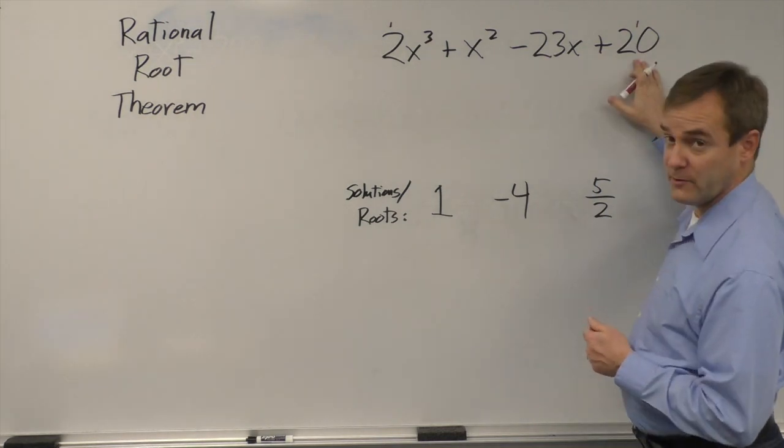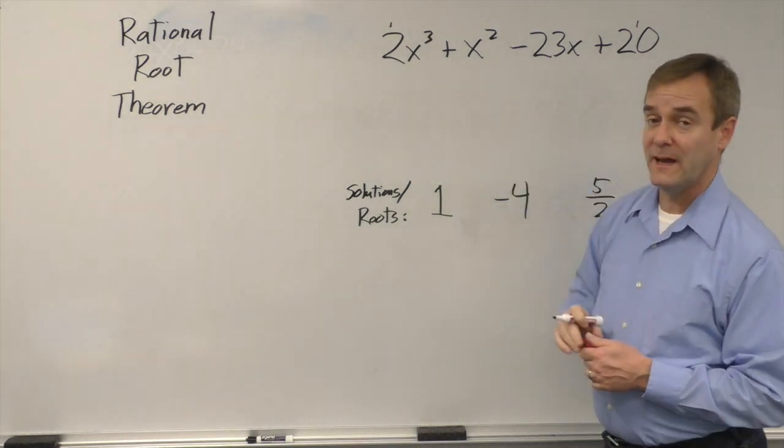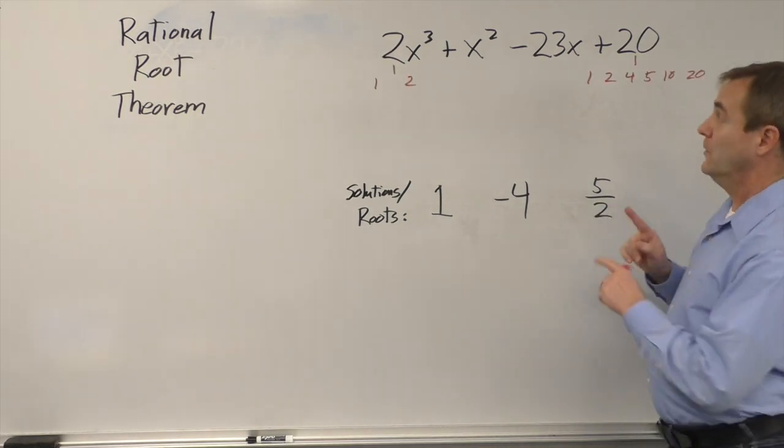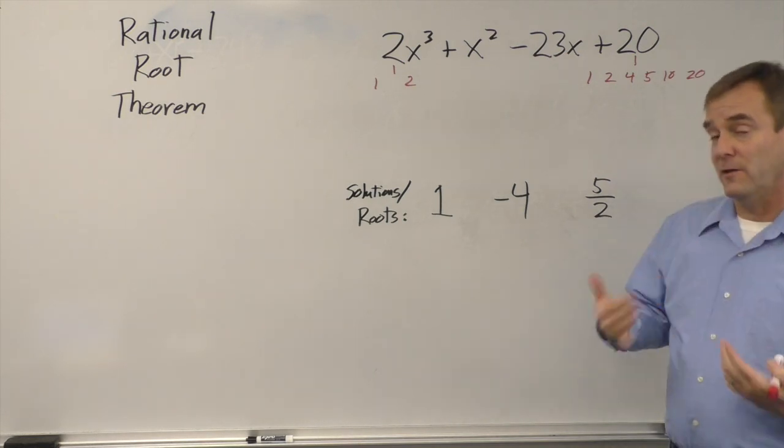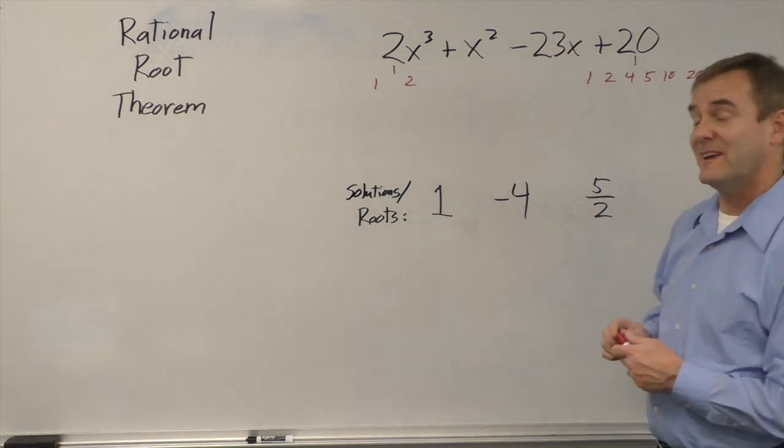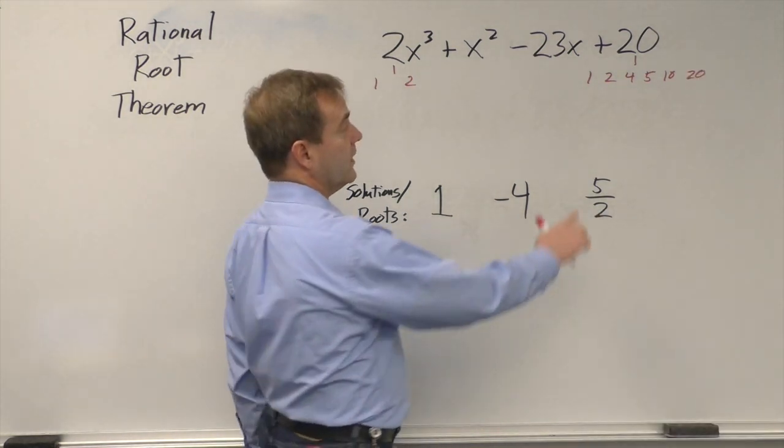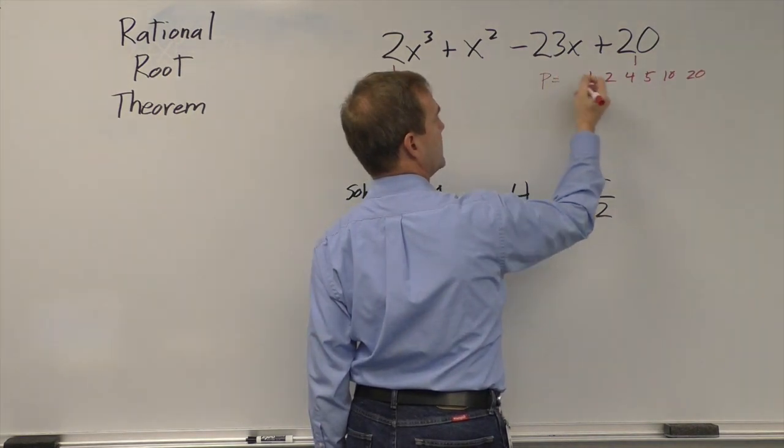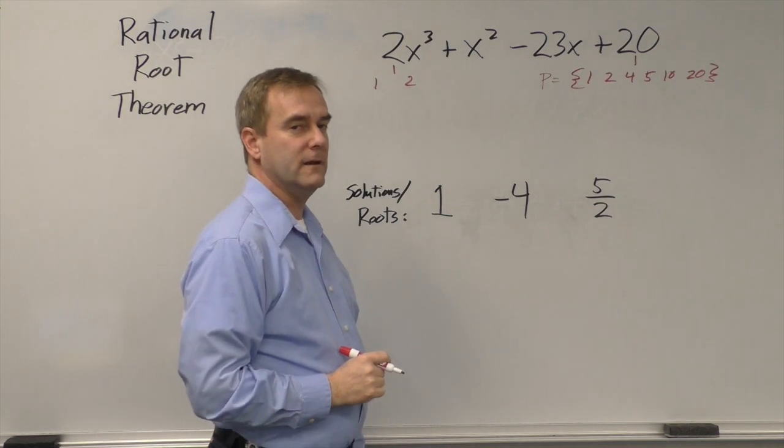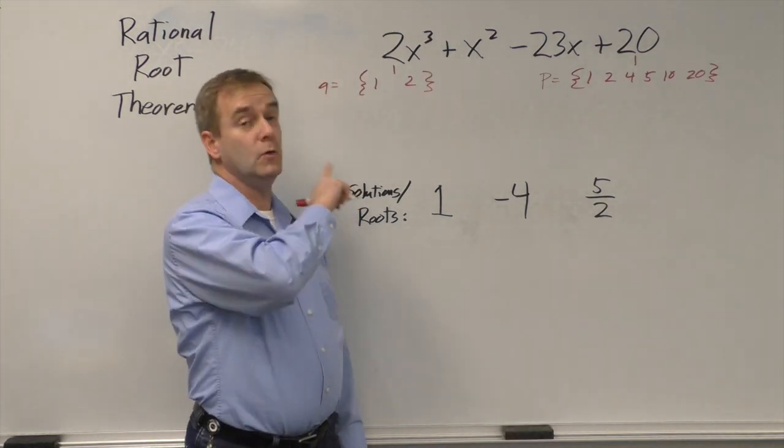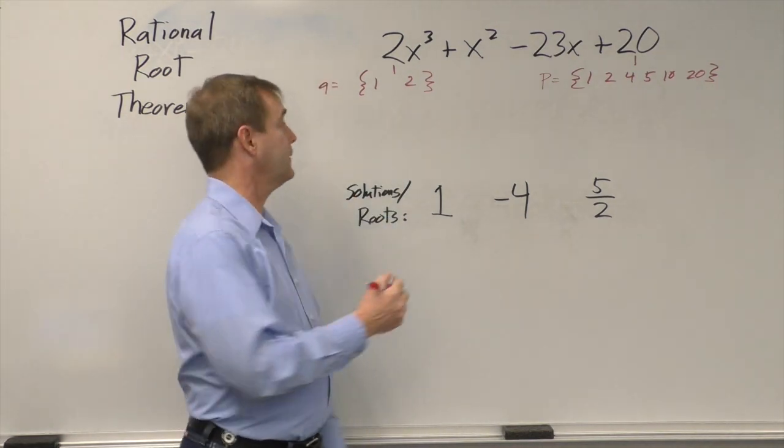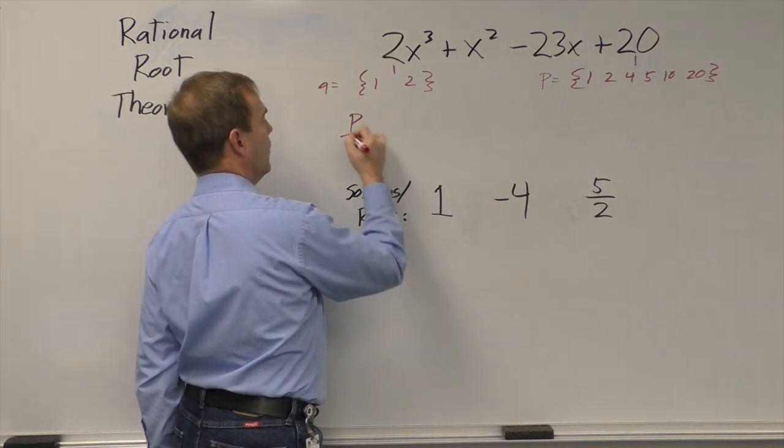Take those two numbers, the constant term on the end, the leading coefficient at the beginning, and factor them completely apart. In fact, slightly different from factoring them completely apart is, you're not factoring 20 into the smallest numbers that multiply to make 20. You are finding all of the numbers that can be factors of 20, and all the numbers that can be factors of 2. We're going to call all of these factors P. P is the list of numbers that contain all the factors of 20. And we'll call all the factors that could make 2 Q. The rational root theorem says that your rational roots have to come from a list which consists of P over Q.